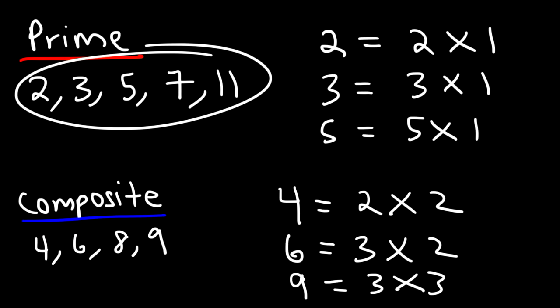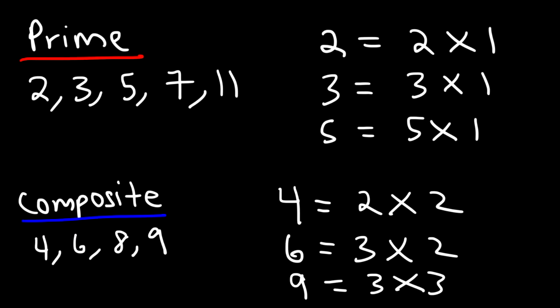So keep that in mind: a prime number can only be broken down into two factors — 1 and itself — whereas a composite number can be broken down into two factors that do not include 1.